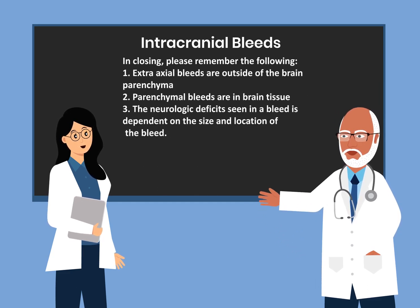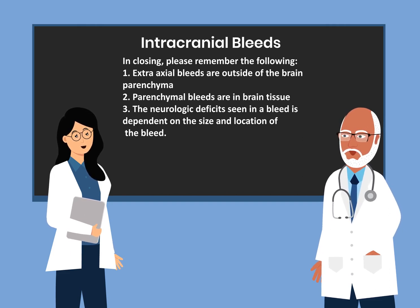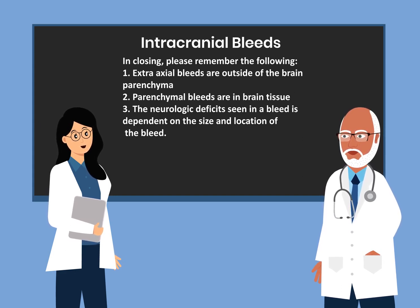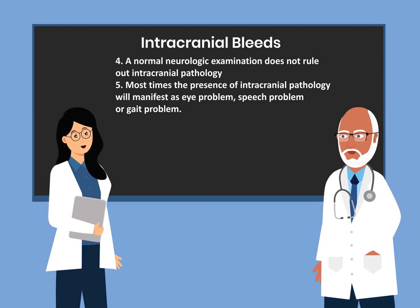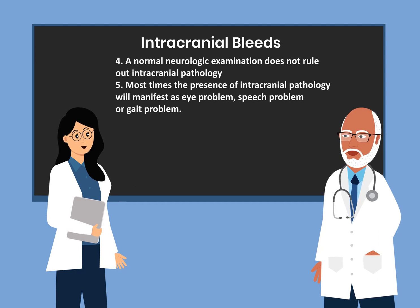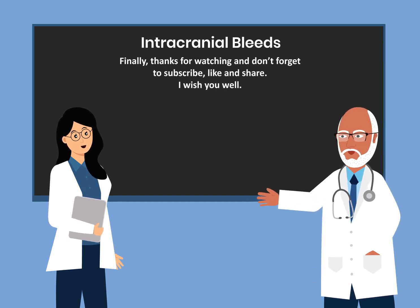In closing, please remember the following. Number one, extra-axial bleeds are outside of the brain parenchyma. Number two, parenchymal bleeds are in brain tissue. Number three, the neurologic deficits seen in a bleed are dependent on the size and location of the bleed. Number four, a normal neurologic examination does not rule out intracranial pathology. And number five, most times the presence of intracranial pathology will manifest as eye problems, speech problems, or gait problems. Thanks for watching — don't forget to subscribe, like, and share.